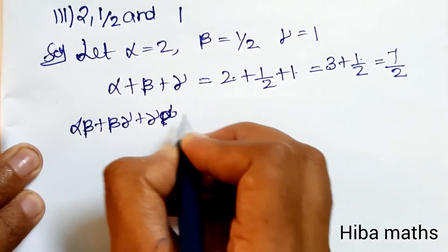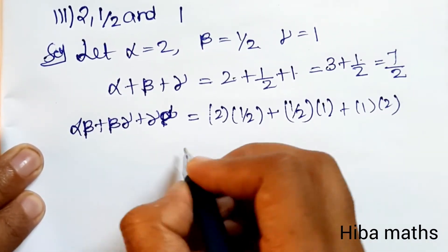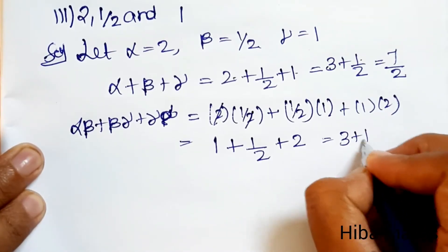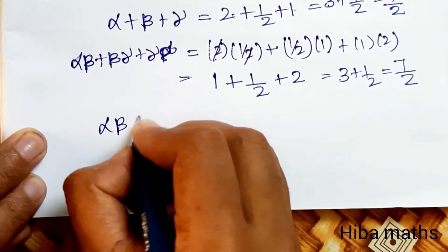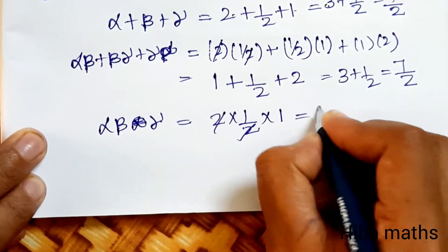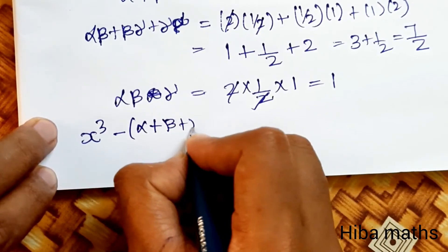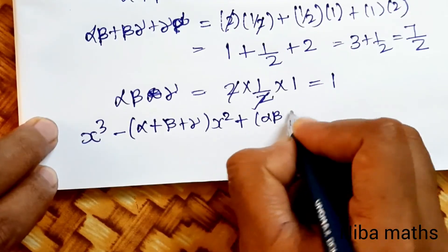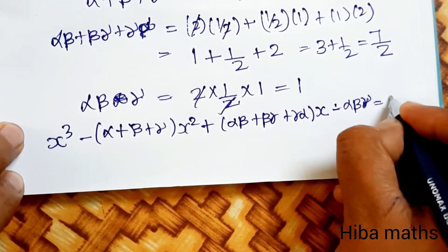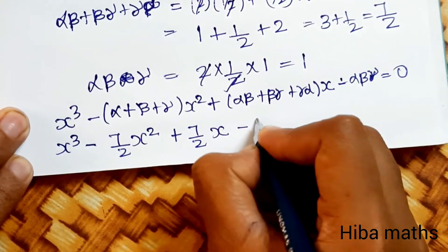For the next problem, the roots are 2, 1/2, and 1. Alpha plus beta plus gamma = 2 plus 1/2 plus 1 = 7/2. Sum of products = 2×(1/2) plus (1/2)×1 plus 1×2 = 1 plus 1/2 plus 2 = 7/2. Product alpha·beta·gamma = 2 × 1/2 × 1 = 1. The cubic equation is x³ minus (7/2)x² plus (7/2)x minus 1 = 0.